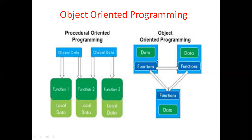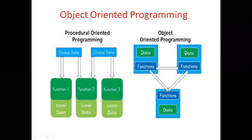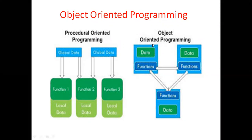Here you can see three figures: this is one object, this is the second object, this is the third object — all are communicating with each other. Object one can communicate with object two, object two can communicate with object three, and object three can communicate with object one. This is called object-oriented programming: an object having two parts — first part is data, second part is functions.